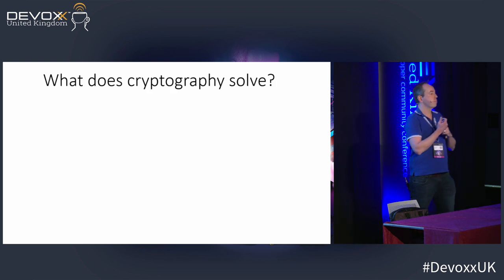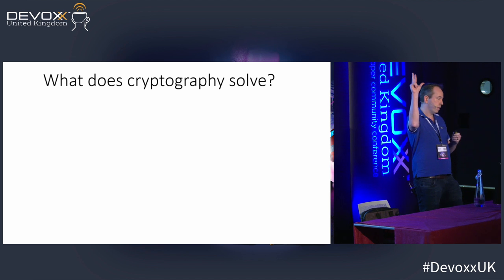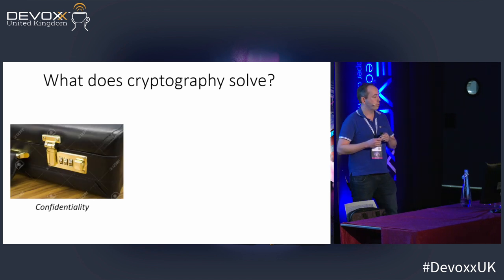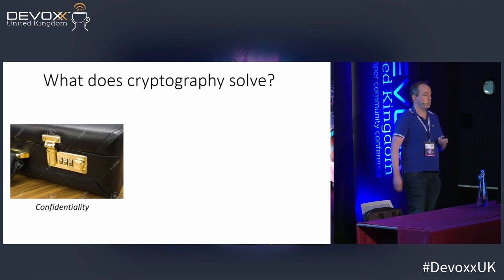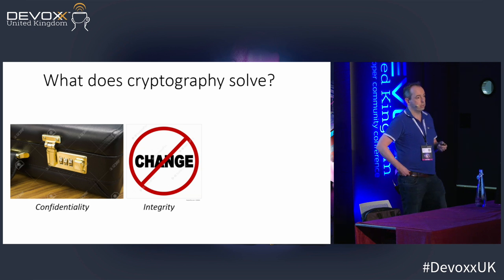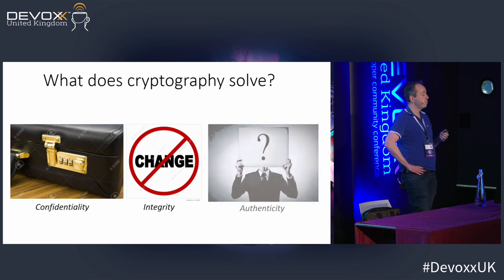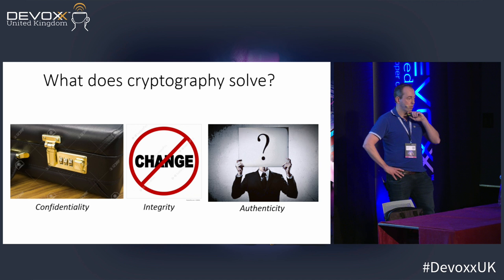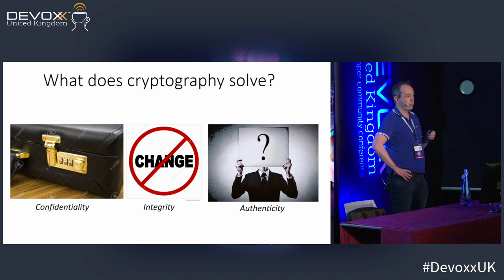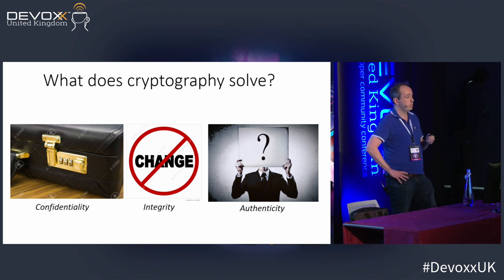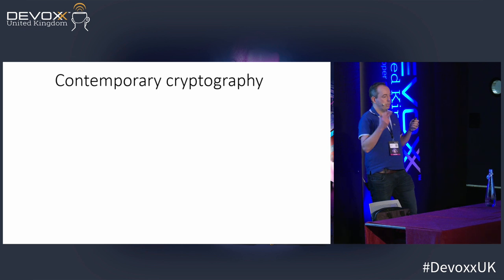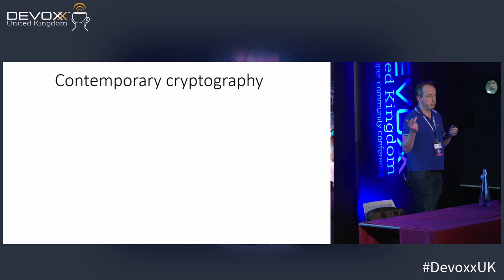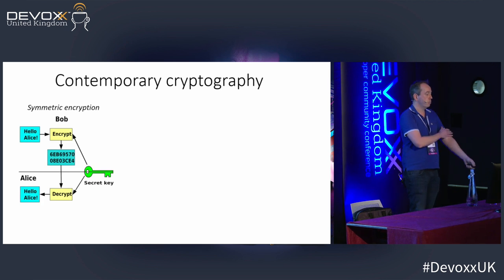If we look at modern cryptography, what does it actually solve? It solves three things. First, confidentiality — I send a message to someone and no one really knows what the message is. Second, integrity — you should be able to see if a message has changed or not. Third, authenticity — if I send a message, can the receiving party determine if I am who I say I am? There are three concepts in modern cryptography that try to solve these problems.